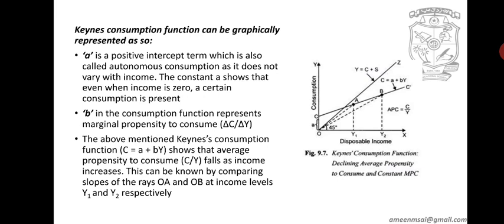The first point is A. A is a positive intercept term, which is also called autonomous consumption, as it does not vary with income. The constant A shows that even when income is zero, a certain level of consumption is still present.